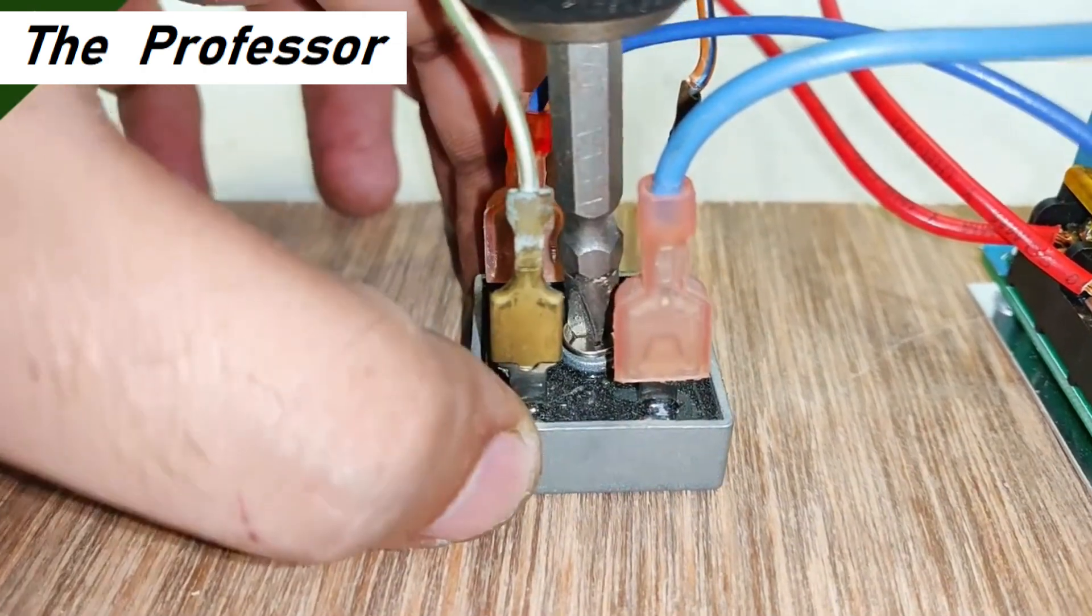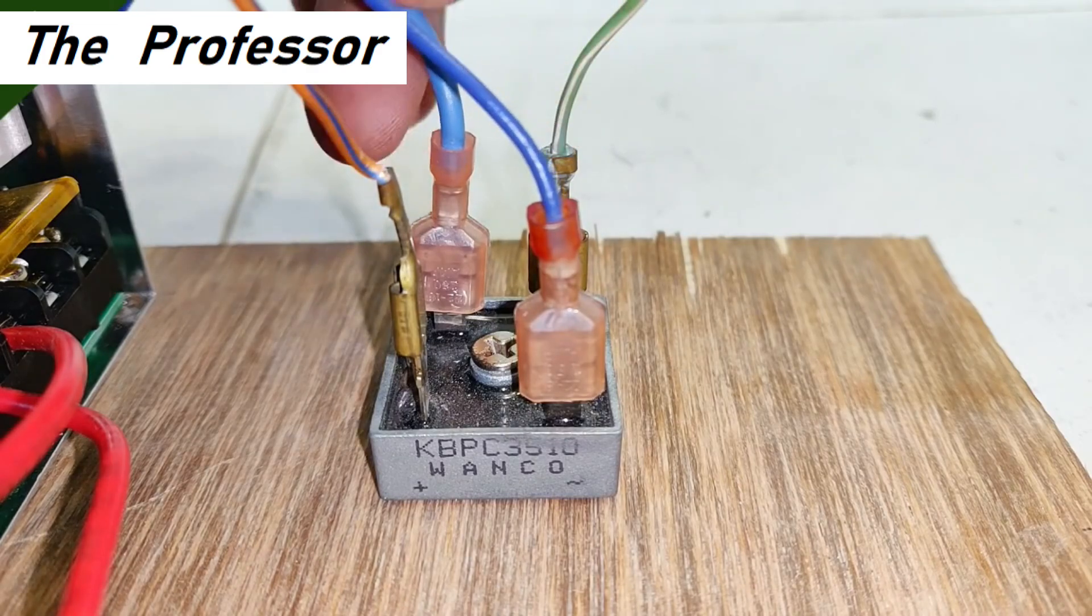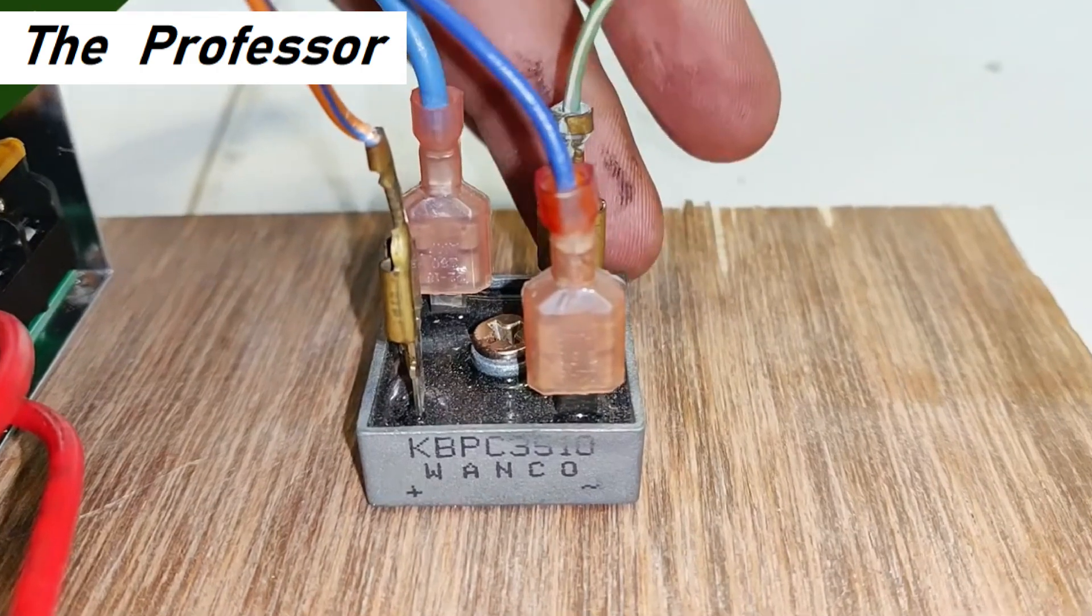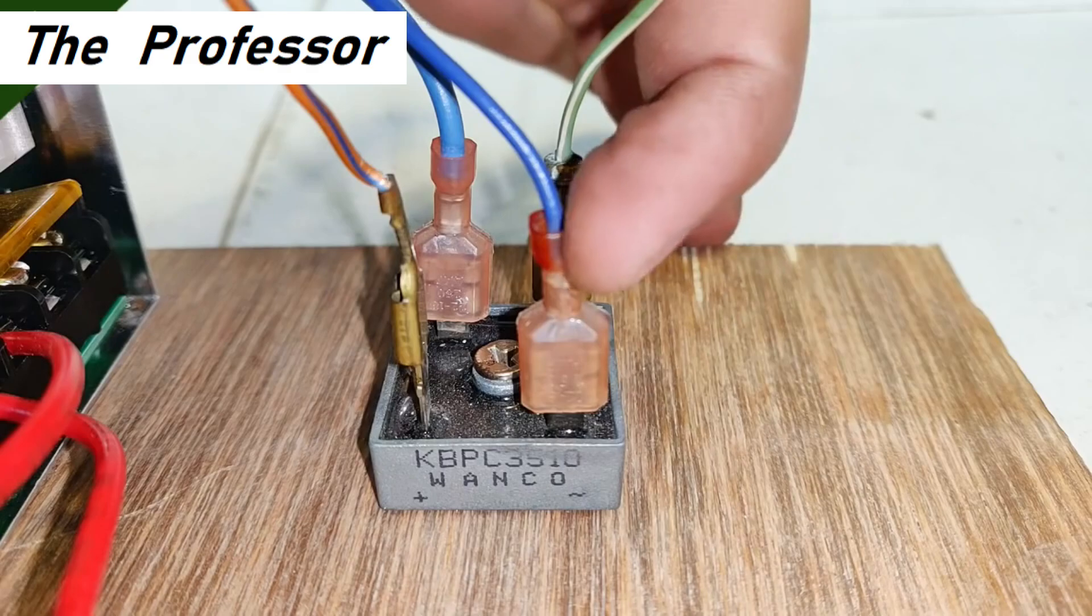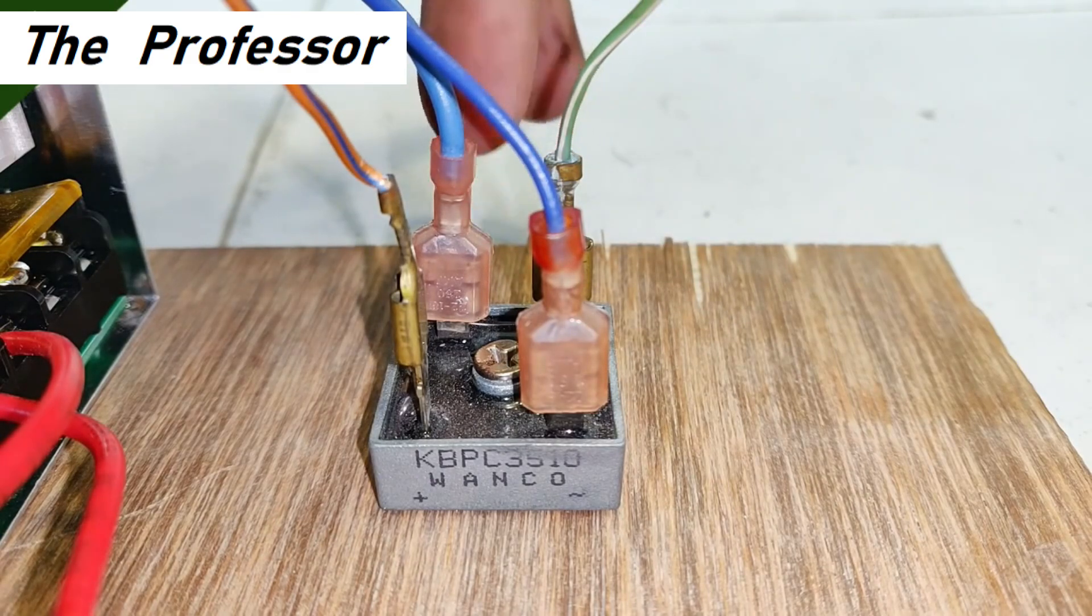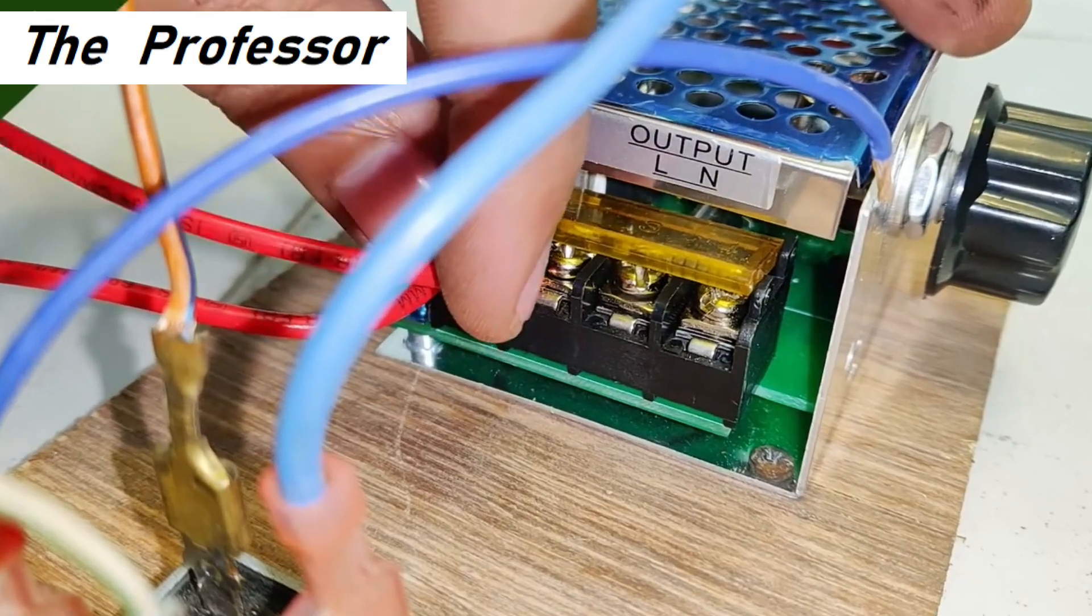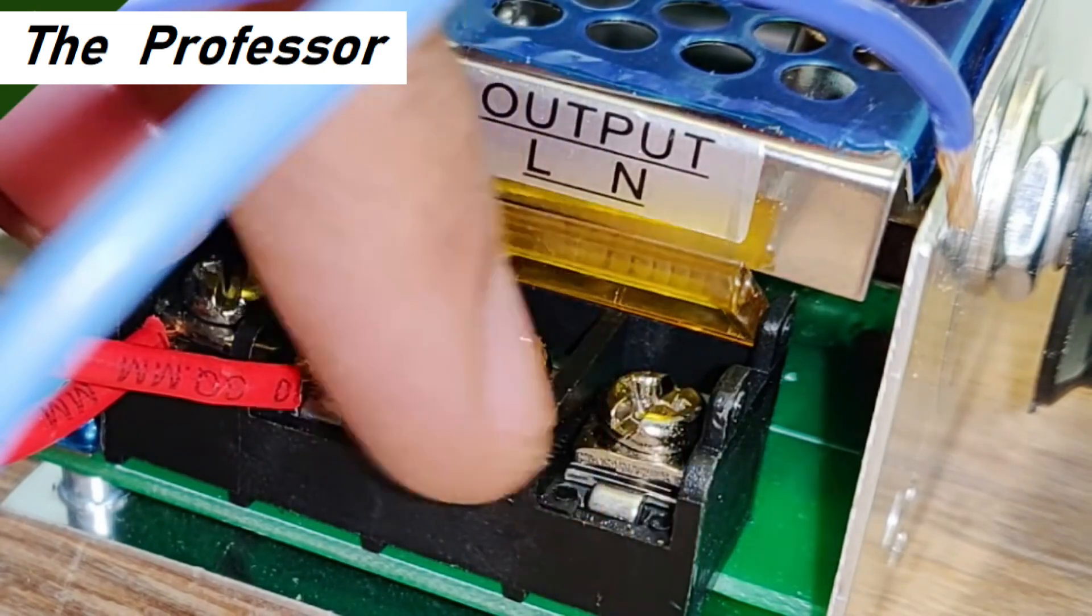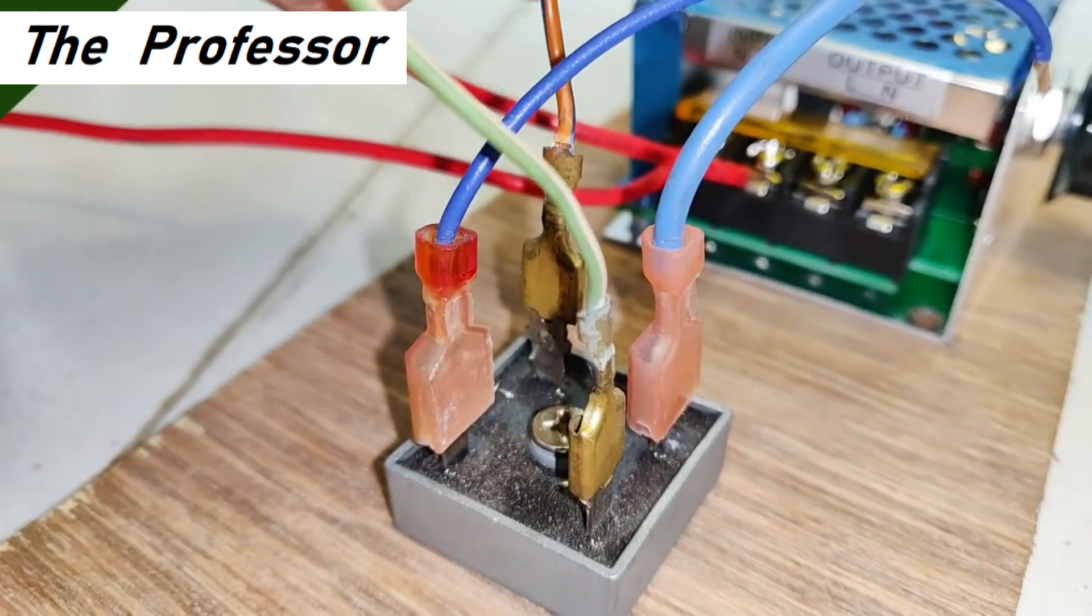With that being done let's move on to the connections of the rectifier to the controller. The two blue wires that you see are the AC terminals as indicated on the rectifier. These two blue wires will be connected to the output terminals of the controller. These two are the output terminals, line and neutral output as indicated here.